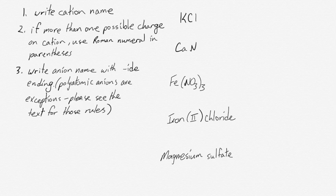The third step is to write the anion name but switch the ending. So something like chlorine, its ion is a Cl minus ion so you don't call it chlorine anymore, you call it chloride. Polyatomic anions are kind of exceptions to this rule and the rules for those are explained in the textbook.